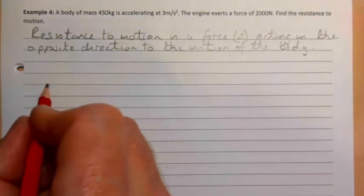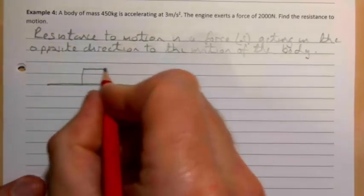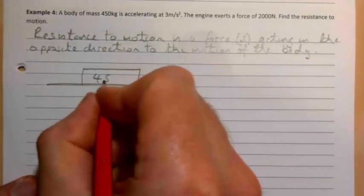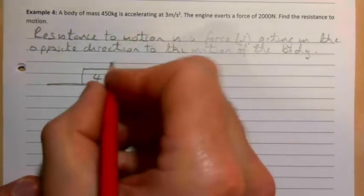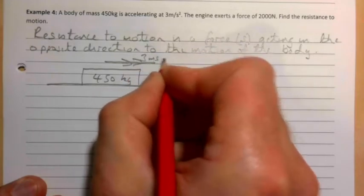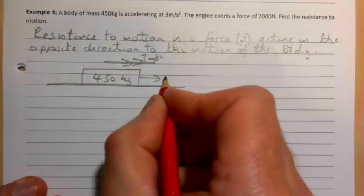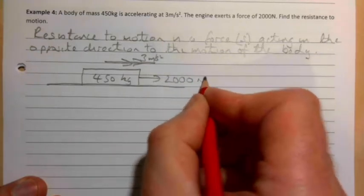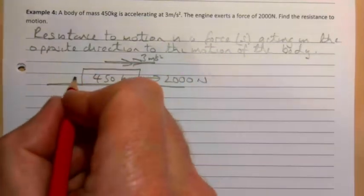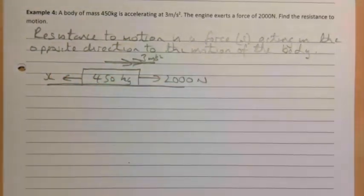Our wee diagram now. It's 450 kilograms. The acceleration is 3, so remember if we do a double arrow, 3 meters per second squared. It is 2000 newtons. And then I'm going to call the resistance to motion X and we're going to try and work that out.